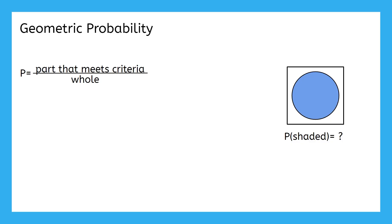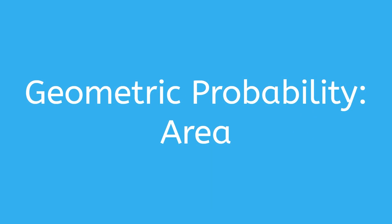This is why we use part that meets criteria over whole instead. Then we just have to decide what our part and whole are for each geometric probability problem. In this particular problem, the whole thing is the total area, and the part that meets the criteria would become the area that meets the criteria. This leads us to our first example problem of geometric probability involving area.